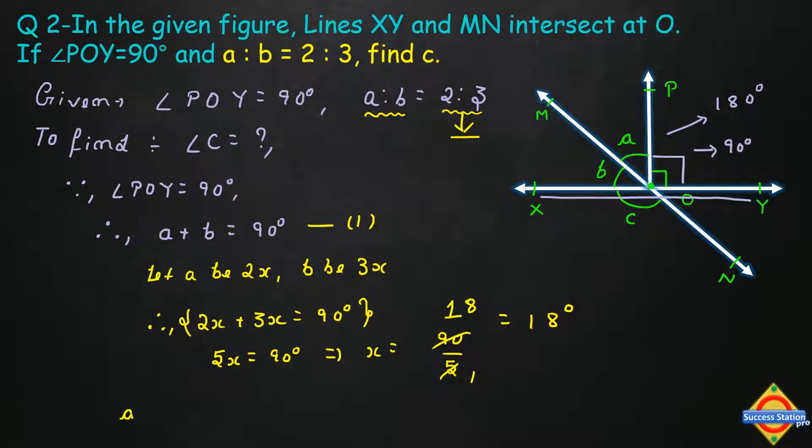Angle A's value will be 2X, so 2 into 18 degrees equals 36 degrees. Angle B's value equals 3X, so 3 into 18 equals 54 degrees.